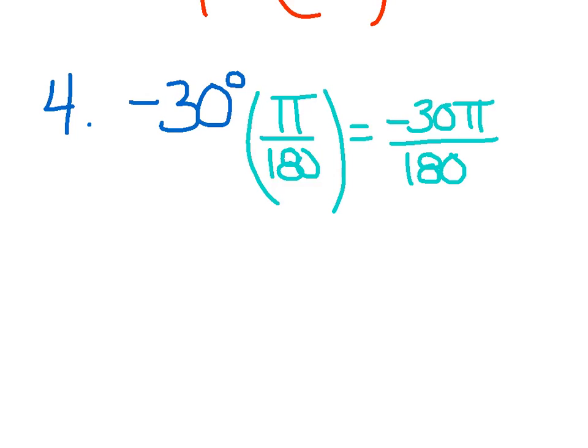So again, straight across the top, I get negative 30 pi. Across the bottom, I get 180. I can kill those zeros. And the 3 and 18, 3 goes into 3 once and into 18 six times. So I would say this is negative pi over 6 radians.